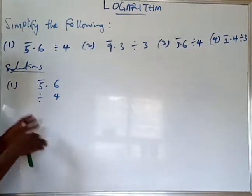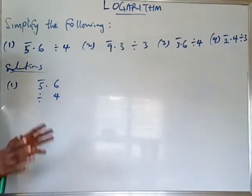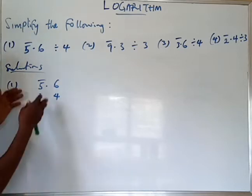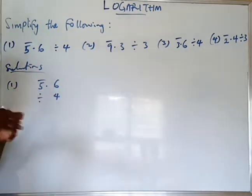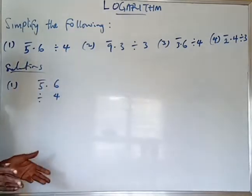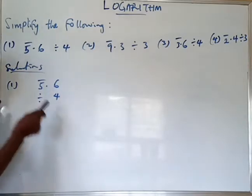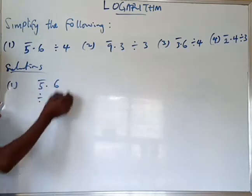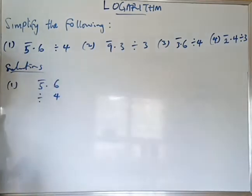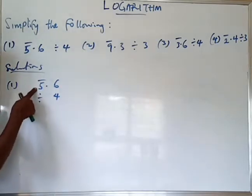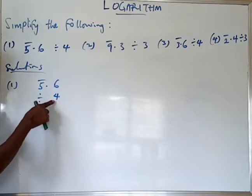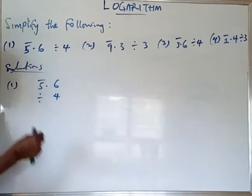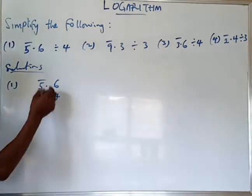It's very necessary for students to understand this aspect very well before we delve into logarithms of numbers less than one, because these are the things that can create problems. Once a student has mastered it fully, there won't be a problem. Since we know that 4 cannot divide 5 without leaving a remainder, the question we have here has to be adjusted. We need to rewrite this 5 as another number that when divided by 4 will leave no remainder — that is, a remainder of zero.